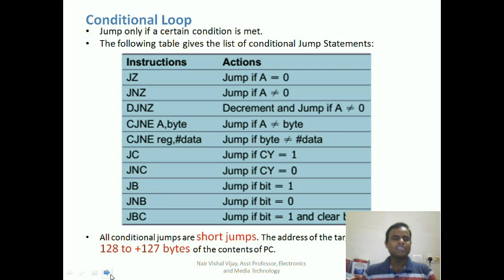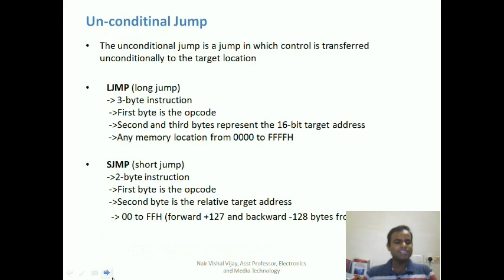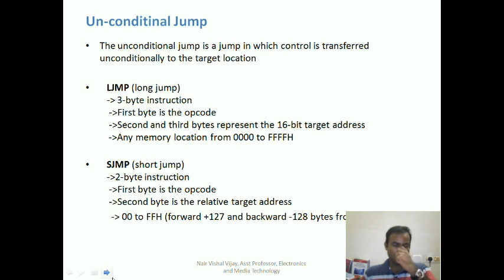Unconditional jumps include statements like LJMP and SJMP. LJMP is a long jump and SJMP is a short jump. Unconditional jumps are jumps which do not have any conditions set — whenever that statement is executed, it will surely jump to the particular address location.